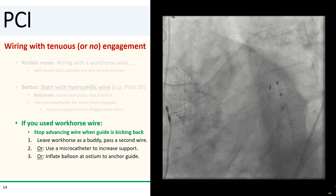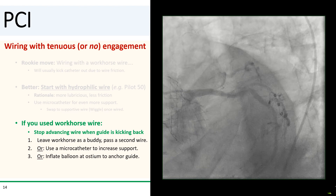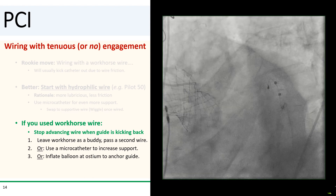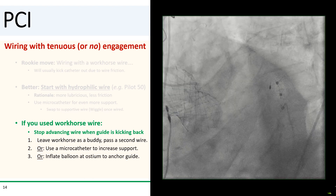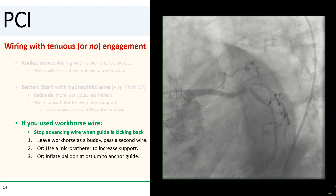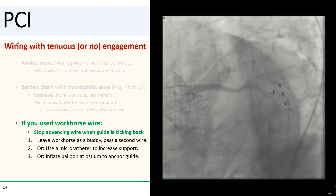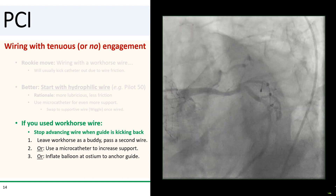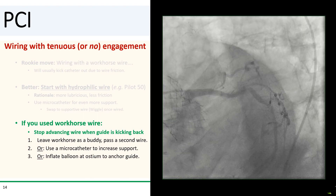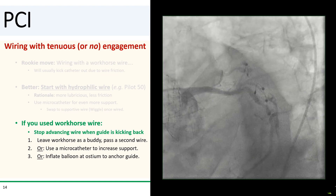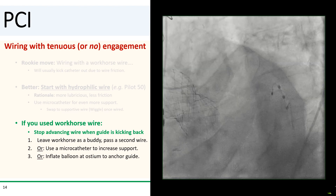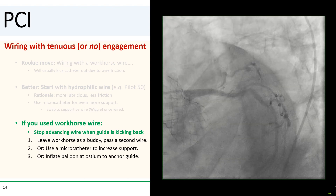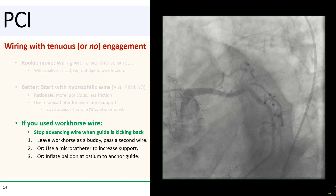There are a few options to salvage engagement before you completely lose it. First, an easy option is to leave your workhorse wire in place as a buddy wire and pass a second wire next to it, preferably a hydrophilic wire. The second option is to pass a micro catheter over your workhorse wire—the micro catheter will decrease friction and increase support.